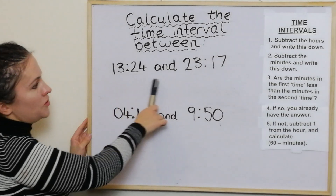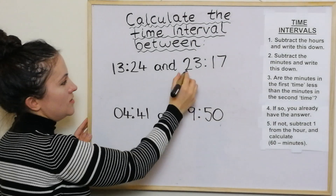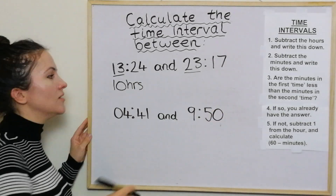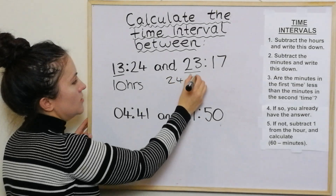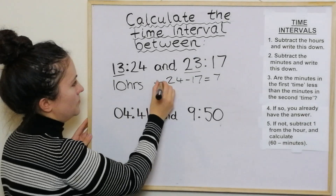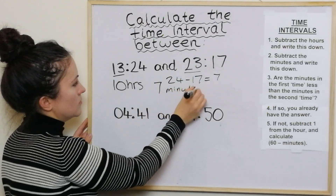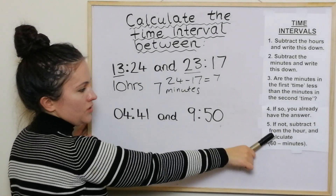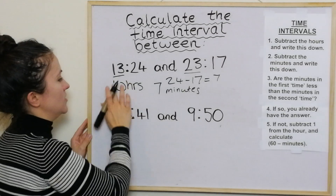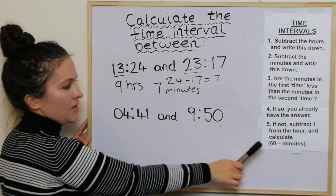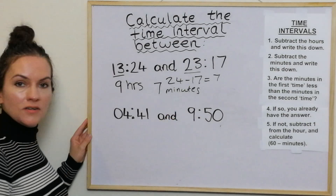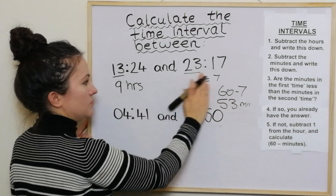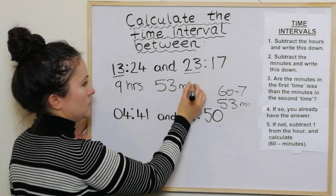Let's see how you got on. In this first one, subtract the hours and write it down: 23 take away 13 is 10 hours. Then subtract the minutes: 24 take away 17 is 7 minutes. Are the minutes in the first time less than the minutes in the second time? The answer is no — they're actually more. So we subtract 1 from the hour, making it 9, then calculate 60 take away 7, which is 53 minutes. So the answer is 9 hours and 53 minutes.